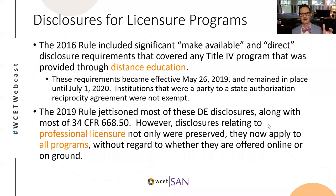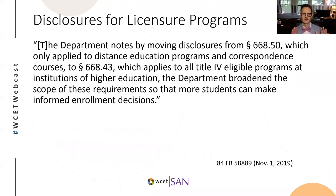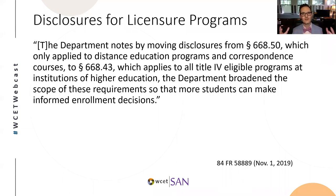From the Federal Register accompanying the 2019 rule, the department stated that by moving these professional licensure program disclosures from 668.50 — which only applied to distance education programs — into section 668.43, which applies to all Title IV programs and all institutions of higher education, they would broaden the scope of these requirements. The department believes this is important because it will allow students to make more informed enrollment decisions.